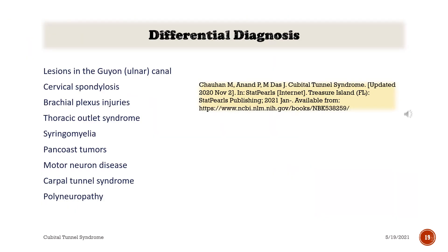Differential diagnosis. Lesions of the ulnar nerve. Cervical spondylosis. Brachial plexus injuries. Thoracic outlet syndrome. Syringomyelia. Pancoast tumors. Motor neuron disease. Carpal tunnel syndrome. Polyneuropathy.